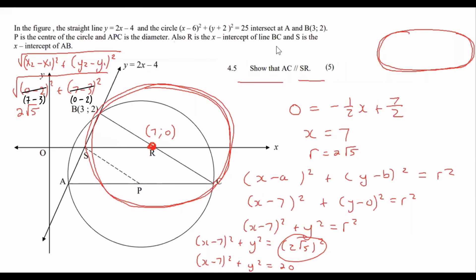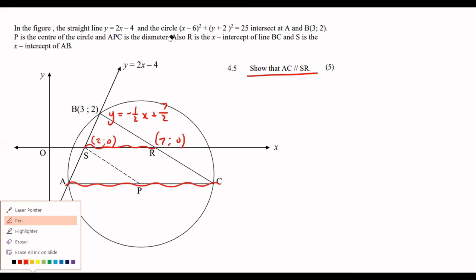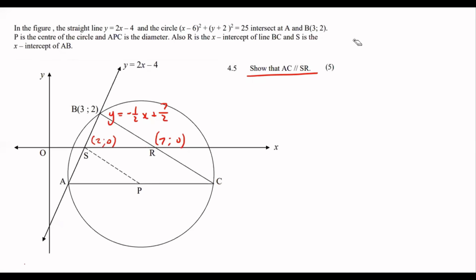The last question: show that AC is parallel to SR. We have R at (7, 0), S at (2, 0), and BC equation y = -½x + 7/2. The gradient of SR: (0 - 0) / (7 - 2) = 0. So the gradient of SR is zero.